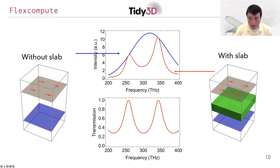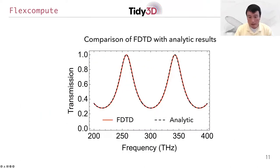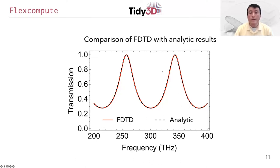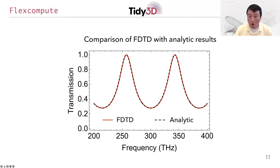You can compare this result with the analytic result. In this plot, the red curve is from FDTD and the dashed line is from the analytic result, and you can see essentially perfect agreement between FDTD and the analytic result. With just two calculations — one for vacuum and one with the slab — you can in fact obtain the behavior of the structure over a broad range of frequencies, in this case all the way from 200 terahertz to 400 terahertz, representing a 200 terahertz bandwidth around a carrier frequency of 300 terahertz.